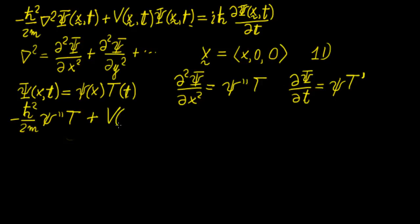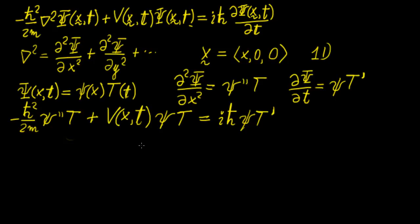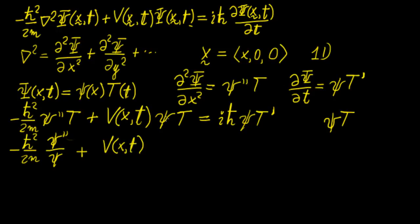We include the potential energy term V(x,t) times the full function ψ·T, and on the right side we have iℏ times ψ·T′. Now, as is common with separation of variables, we divide everything through by ψ·T to separate the variables. We end up with ψ″/ψ + V(x,t) on the left, and iℏ·T′/T on the right. Now that those two sides are separated, we can solve them independently.